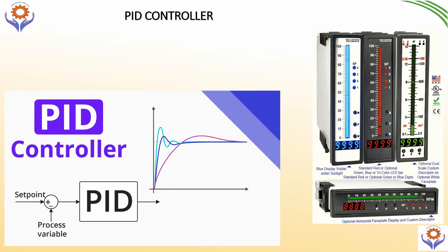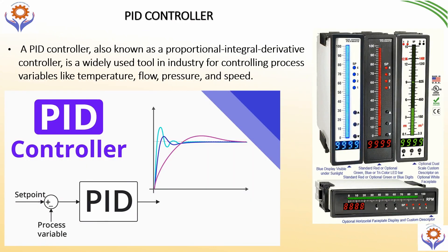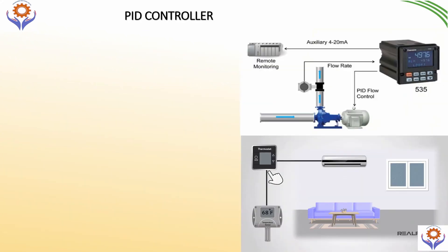Let's begin. What is PID controller? PID controller is also known as Proportional Integral Derivative controller. It is widely used in the industrial purpose for controlling the process variable like temperature, flow, level, pressure, and speeds.